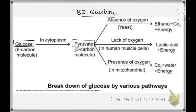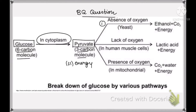Firstly, glucose — which is a six-carbon molecule — is broken down in the cytoplasm of every cell into pyruvate, which is a three-carbon molecule, and a very small amount of energy is released. This pyruvate then further breaks down under one of three conditions. The first condition is the complete absence of oxygen, as in yeast, where the products are ethanol, CO2, and energy.